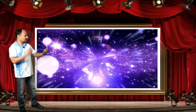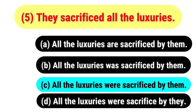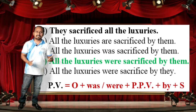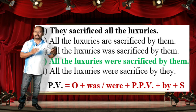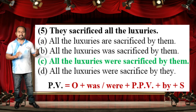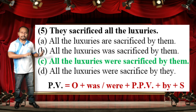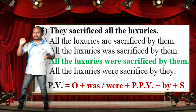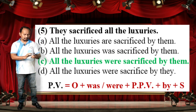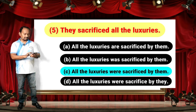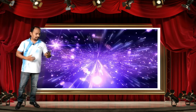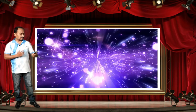The correct answer is: 'All the luxuries were sacrificed by them.' This sentence is in simple past tense. The formula for simple past tense passive voice is: Object + was/were + PPB + by + Subject. Using this formula we correctly change the given sentence.